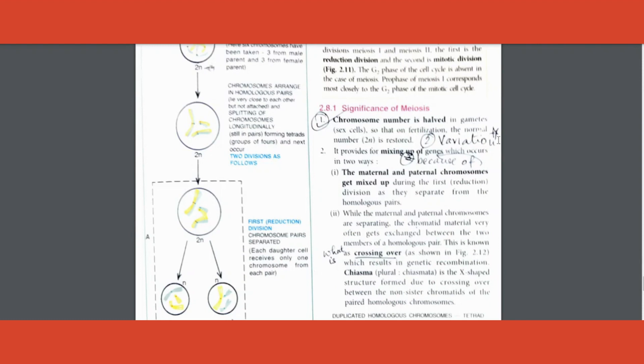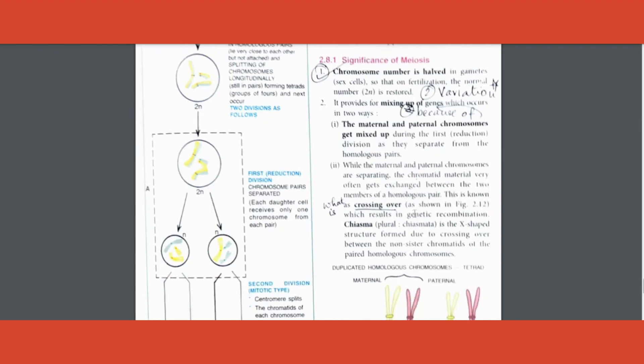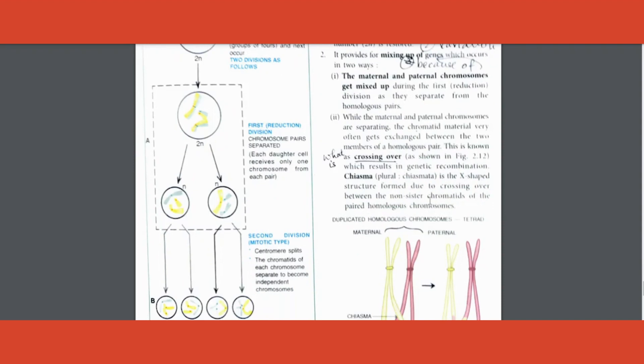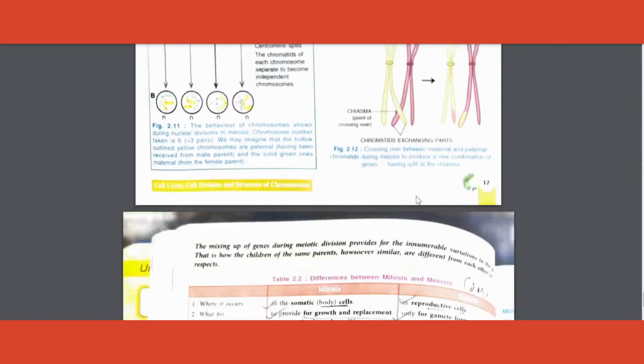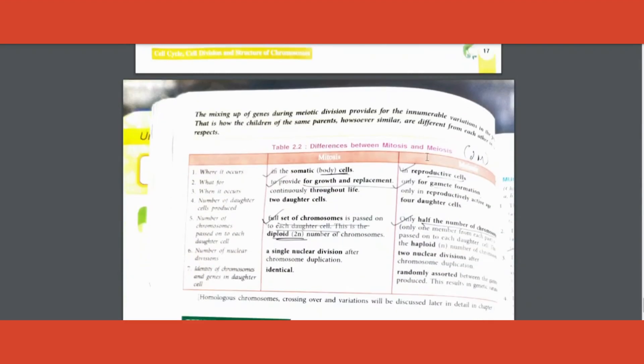That's your second point - please write that because many children miss that out and I've seen them losing marks. What is crossing over is one more question they may ask. What is chiasmata? These are the X-ray structures that are formed.